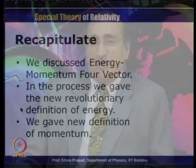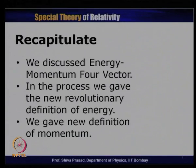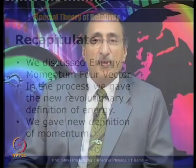This was a totally revolutionary and different concept of energy which does not have a classical analog. This four vector is now re-termed as the momentum-energy four vector. We discussed the energy-momentum four vector and gave a new revolutionary definition of energy. As a consequence, we arrived at a new definition of momentum. The definition of momentum in the classical limit — where particle speed is much smaller than the speed of light — reduces to the classical definition of momentum.